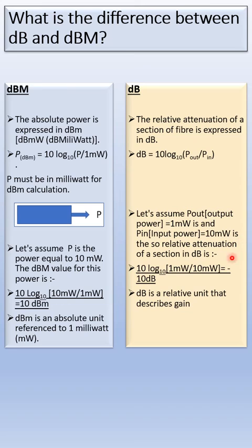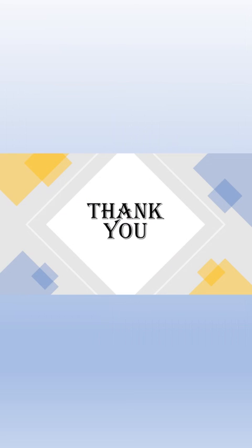So the relative attenuation of the section in dB is 10 log₁₀(1mW/10mW) = -10 dB. So dB is a relative unit that describes gain. Thank you.